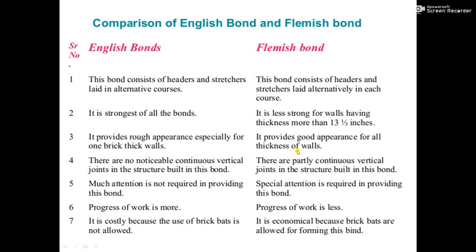It means, in the English bond, in the alternate courses we are placing the headers and stretchers alternately. But in the Flemish bond, we are placing the headers and stretchers in the same course alternatively. This is the first difference between these two bonds.